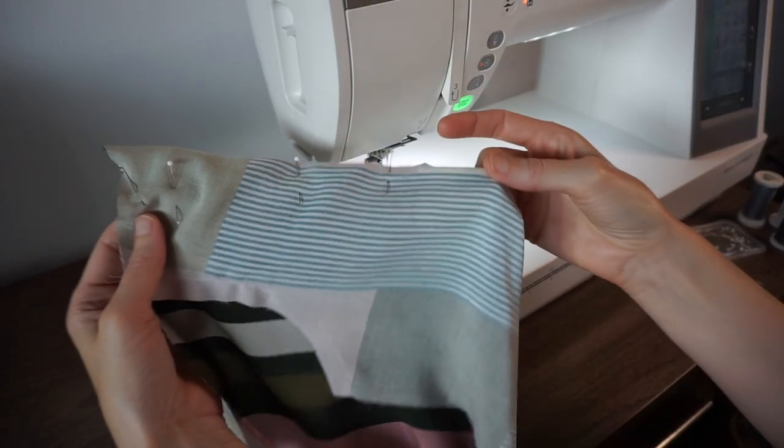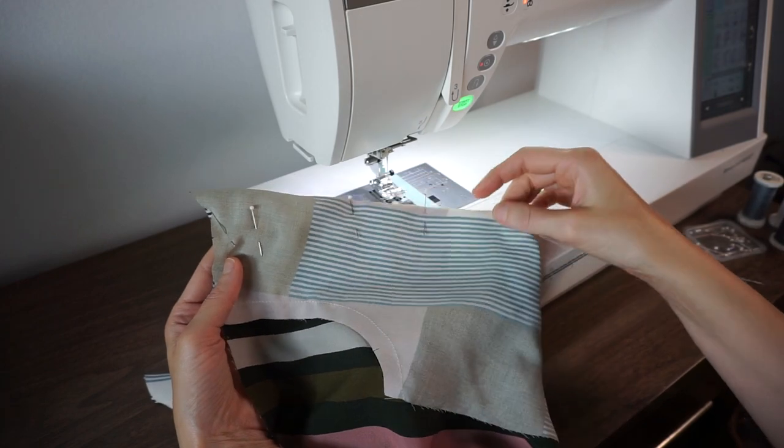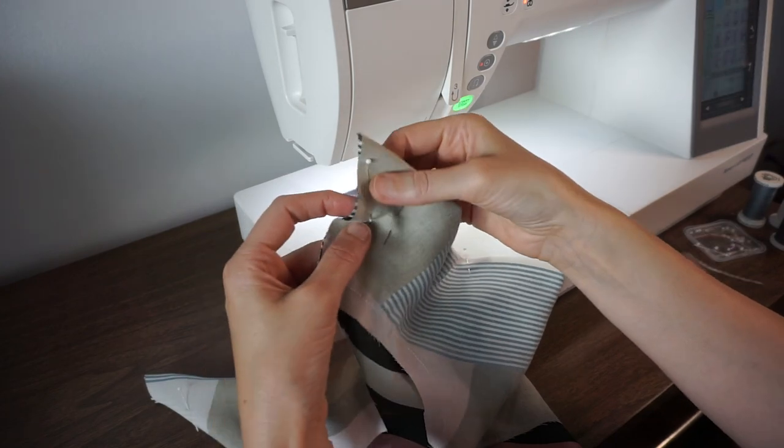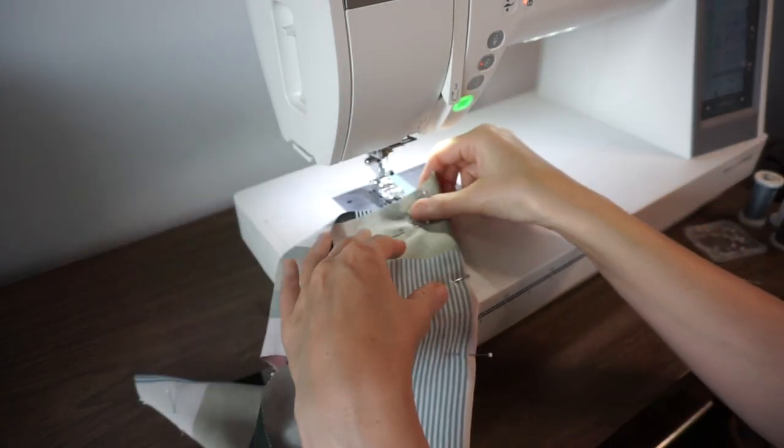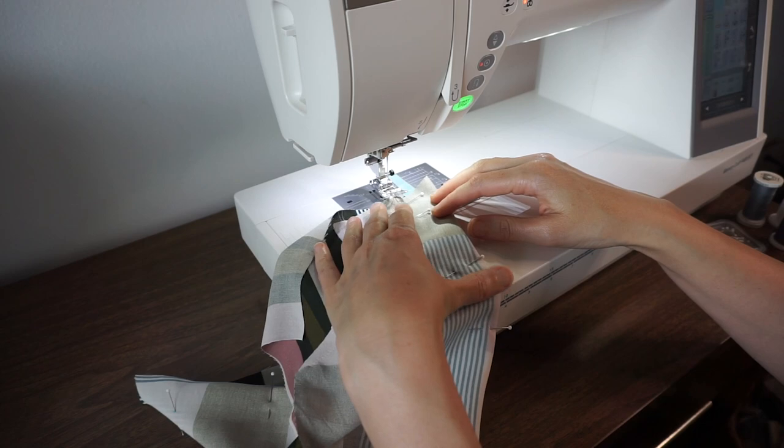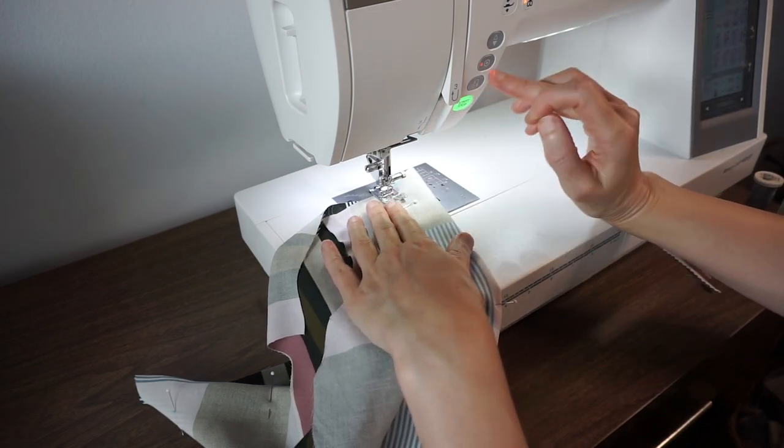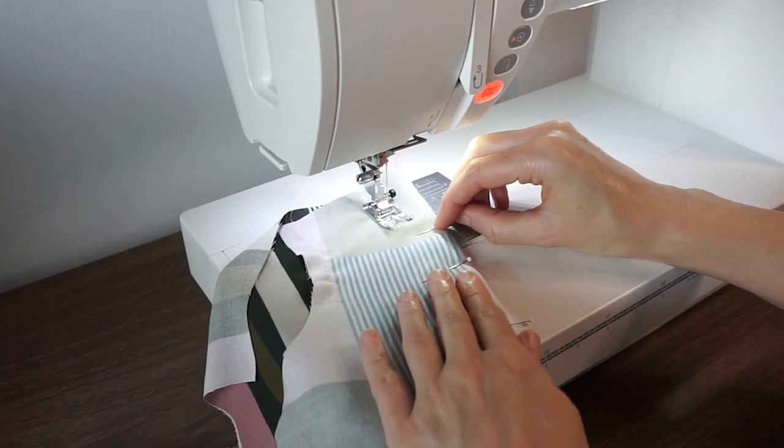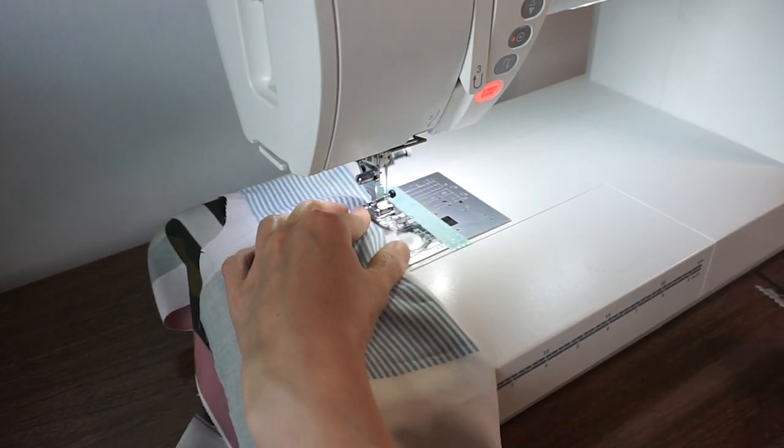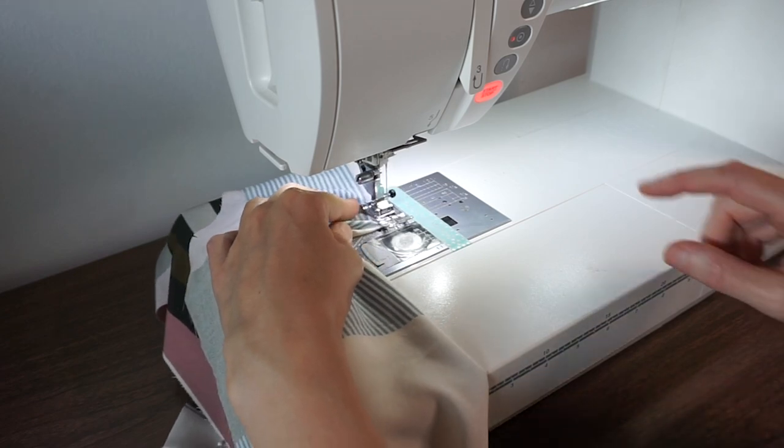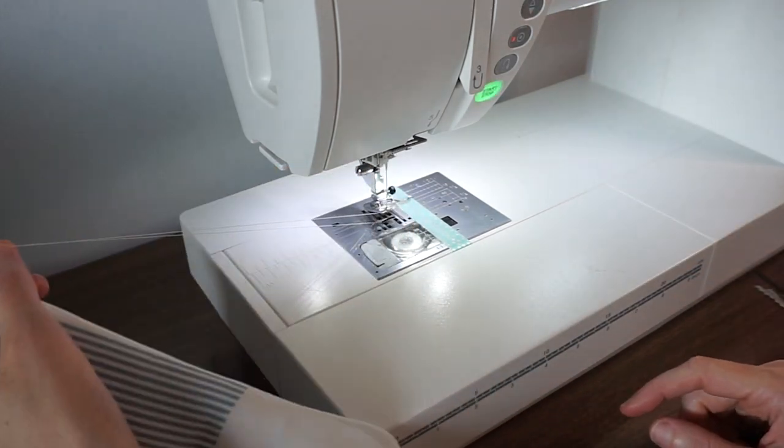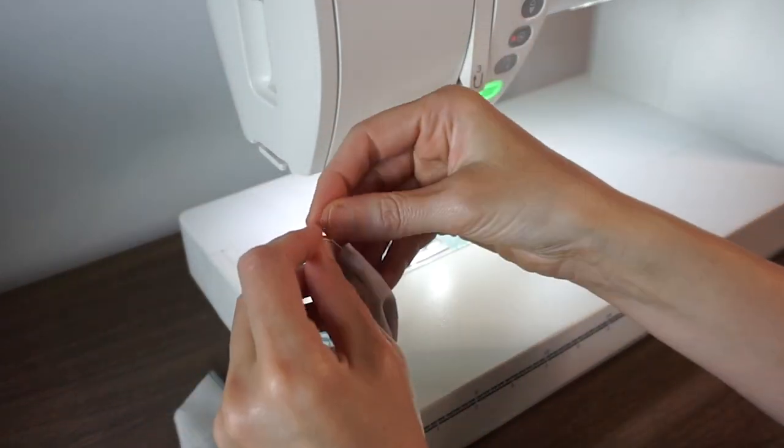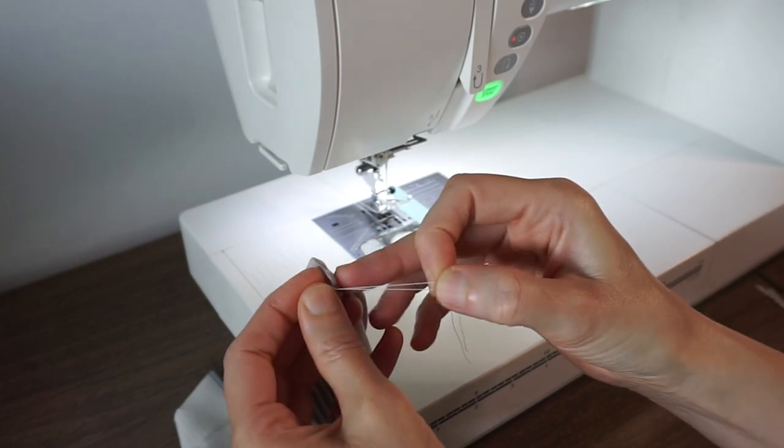Next we're going to sew the darts. I have this pinned with right sides together and I like to just put a pin through every dot. I start at the end of the dart and stitch all the way to the point, and then you want to pull long threads at the end and tie them in a knot close to the end of the dart.